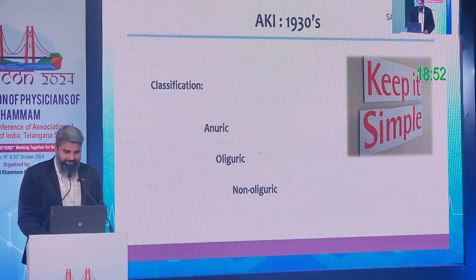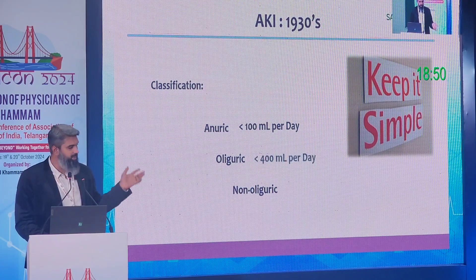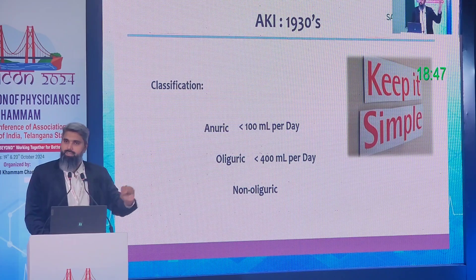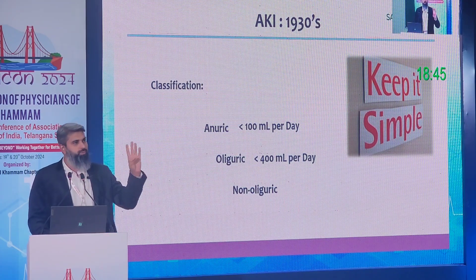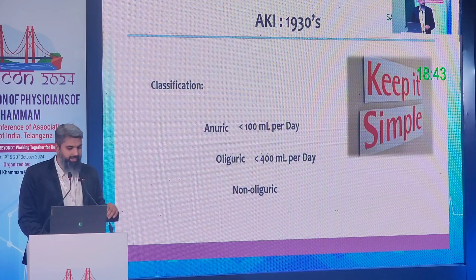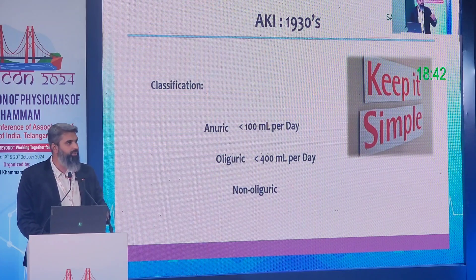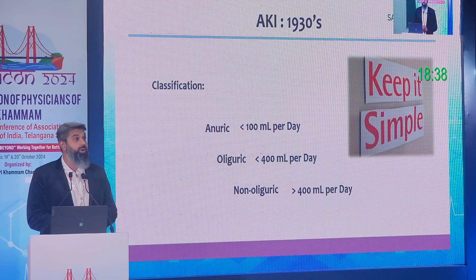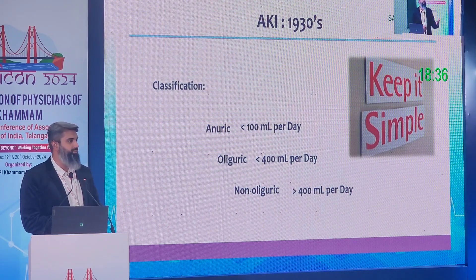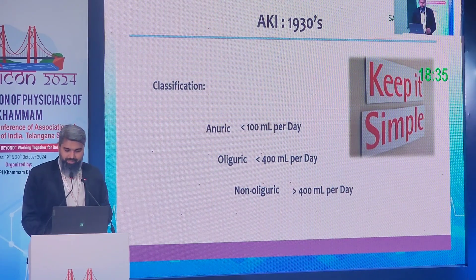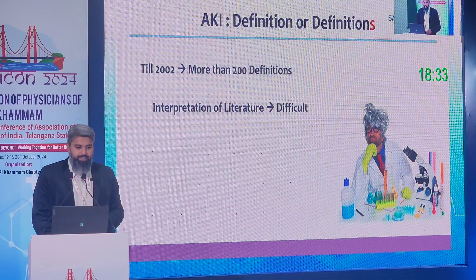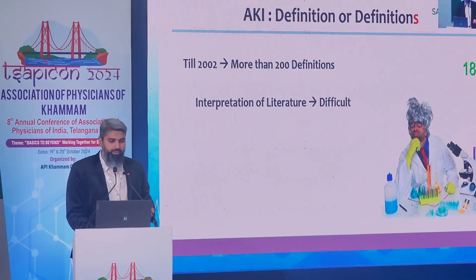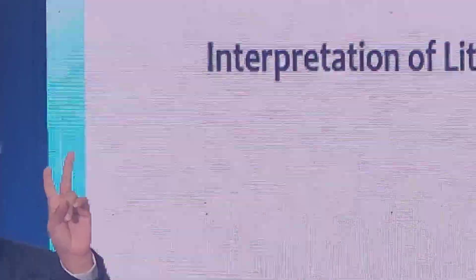Anuric means less than 100 ml in 24 hours; oliguric means less than 400 ml in 24 hours; and non-oliguric means you have good urine output but creatinine is still high — you're not able to excrete waste products from your body. That's AKI. Until 2002, there were more than 200 definitions of AKI.